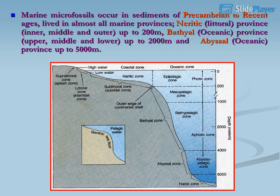Marine microfossils lived in almost all marine provinces: the Neritic province (littoral, inner, middle and outer) up to 200 meters; the Bathyal oceanic province (upper, middle and lower) up to 2,000 meters; and the Abyssal oceanic province up to 5,000 meters.